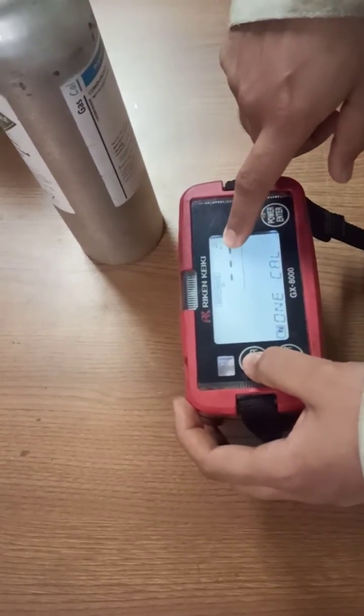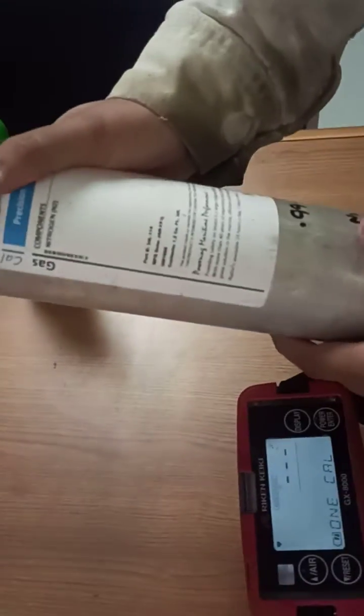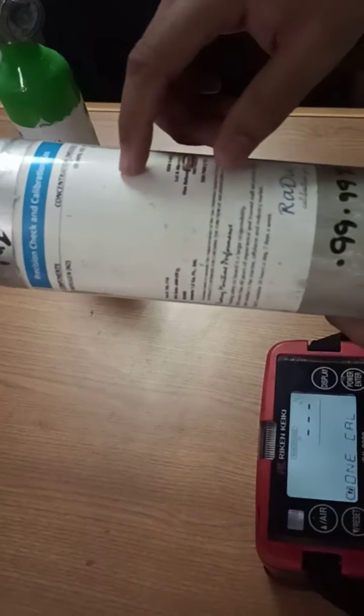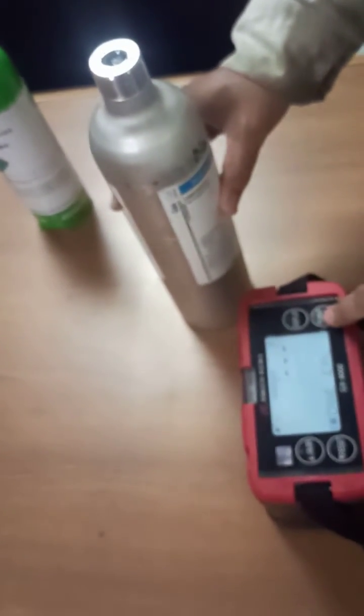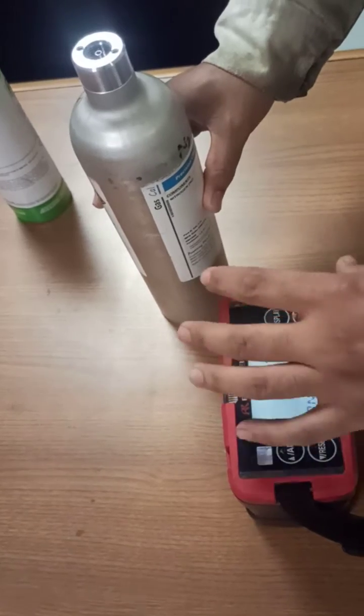O2 sensor is selected. After this, you have to take the nitrogen bottle. As shown, this bottle contains 99.999% volume concentration of N2. If we connect this bottle to the gas meter and do one cal, the O2 sensor will show zero oxygen, zero percent oxygen.